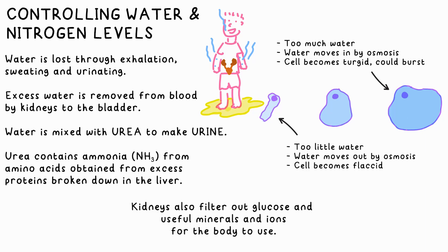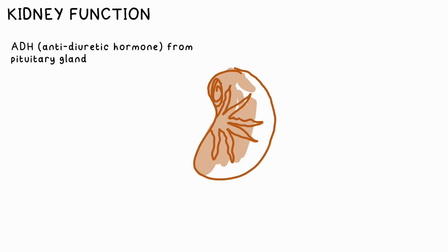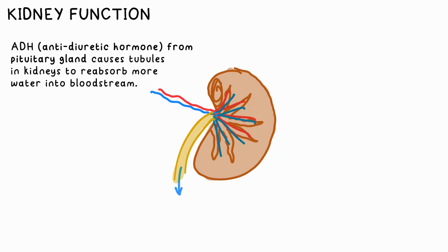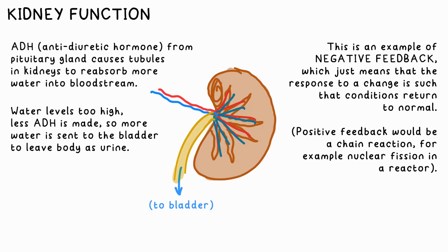They also filter your blood to reabsorb useful substances like glucose and some ions. Anti-diuretic hormone, or ADH, is produced in the pituitary gland, which travels to the kidneys and causes the tubules in your kidney to reabsorb more water into the bloodstream, so less goes to the bladder. If the water level is too high, less ADH is produced, so the kidneys cause more water to be lost in urine. In both cases, the water level returns to normal.